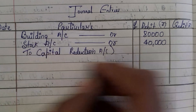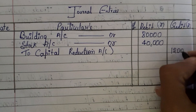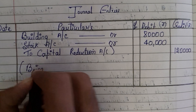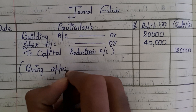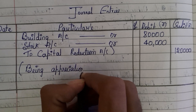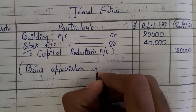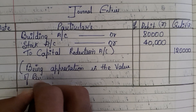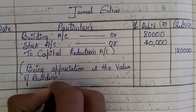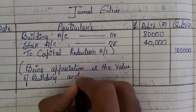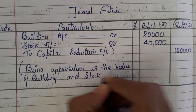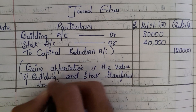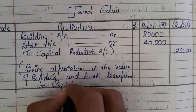Whatever profit or increase has happened, that has to be transferred into capital reduction account. Capital reduction account is credited for a total of 1 lakh 20,000. The narration will be: being appreciation in the value of building and stock transferred to capital reduction account.